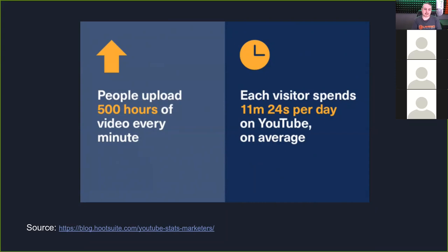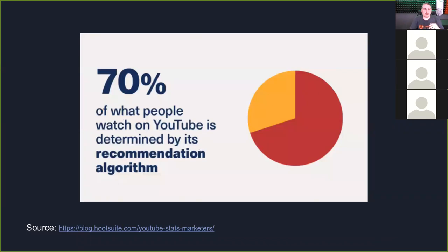To put it in scale: there are only about 329 million people in the US at the last census. That's a lot of global audience and global reach. It's also interesting that the core team of YouTube is around 2,000 people. 70% of what people watch on YouTube is determined by its recommendation algorithm — if you watch a video on woodworking, you're going to see more videos on woodworking. The discoverability of videos on YouTube is what absolutely makes it an incredible platform and really tops Facebook.